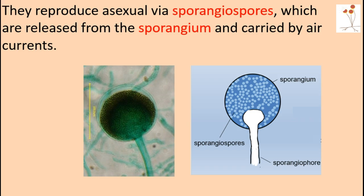They can reproduce by two ways: asexually or by sexual reproduction. They usually reproduce asexually when they have plenty of nutrients and environmental conditions are good for growth. They do this by forming a specialized hyphae called a sporangiophore. The sporangiophore will form a sac-like structure called the sporangium, and inside that sac will be hundreds of sporangiospores. These sporangiospores are held up in the air so that any passing air current, when the sporangium ruptures, can carry those spores to other suitable growing environments.